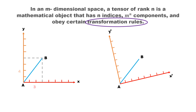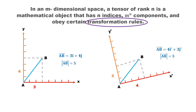The displacement vector from point A to point B, when measured in two different frames, the component and basis vector of the displacement vector are changing. But the magnitude and direction of the displacement is the same. This means that the tensor itself is invariant, on which the transformation of the coordinate system does not matter.